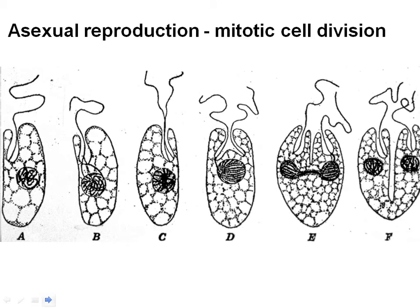Reproduction is by mitotic cell division. This diagram just shows that mitotic cell division begins at the anterior end and continues to the posterior end. What's important is that it is a process of mitotic cell division. As far as we know, there's no sexual cycle in these organisms. So we won't draw out the life cycle — it's basically asexual reproduction by mitotic cell division. Very effective, but that's it.